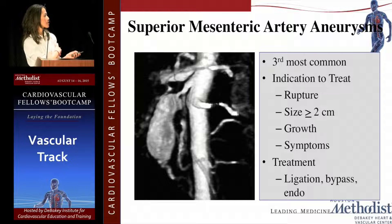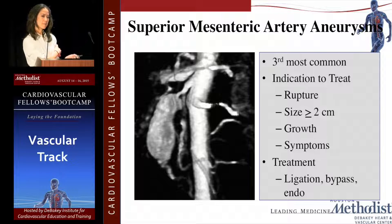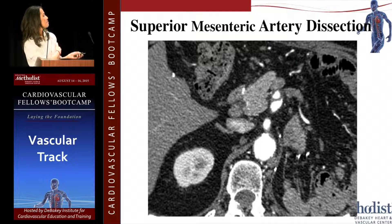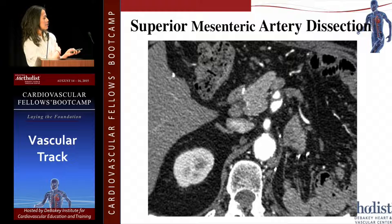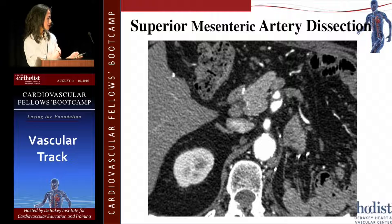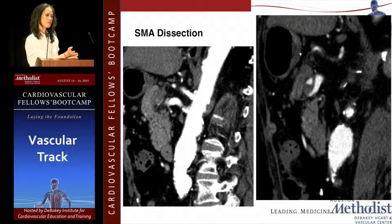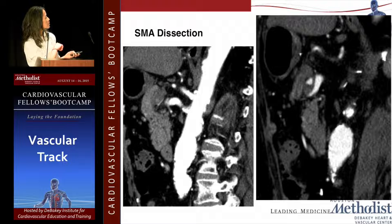SMA aneurysm is very rare — the third most common type. These shouldn't be fixed unless they get really large. Treatment options include ligation without bypass if there's good collateral flow, or bypass if collateral flow is inadequate. Endovascular stenting is tricky but not impossible. After spontaneous dissection of the SMA, you can have aneurysmal dilatation — this is not that rare, and we'll see more of these as CT imaging becomes more common. The aneurysm from SMA dissection is typically not right at the ostium like atherosclerotic disease, but about one to two centimeters distal to the origin of the SMA.